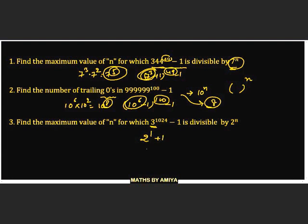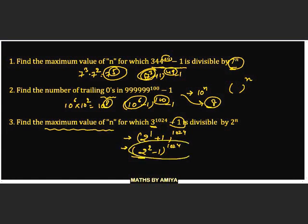For Question 3, we need the maximum value of n for which the number is divisible by 2^n. We have two conditions: (2 + 1)^1024 or (2² − 1)^1024. Since we want the maximum power of 2, we work on the base with the highest power of 2, which is 2². The base is 2², the power is 1024 = 2^10, so the multiplication gives 2² × 2^10 = 2^12. The maximum value of n is 12.